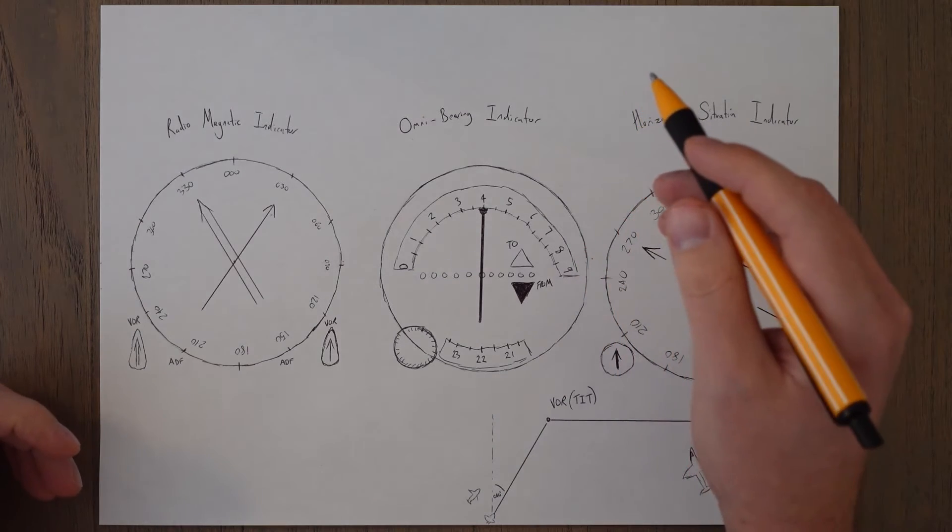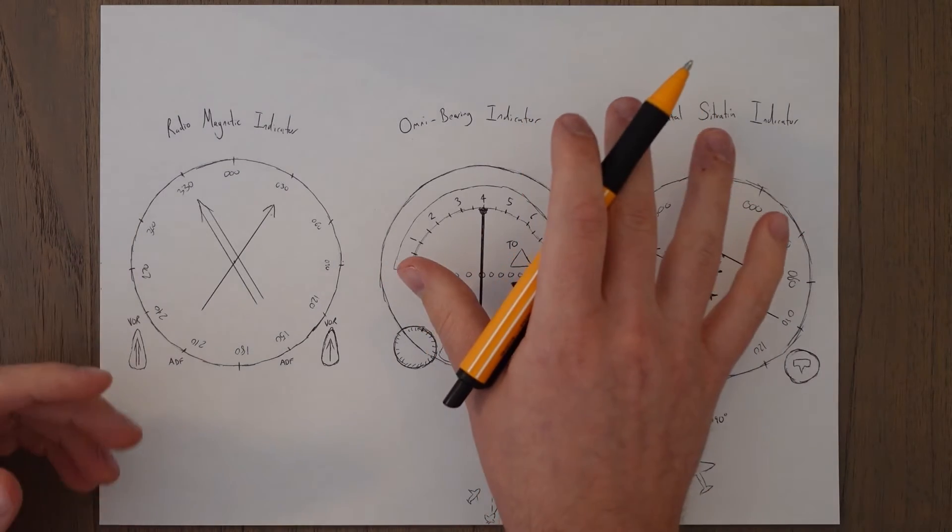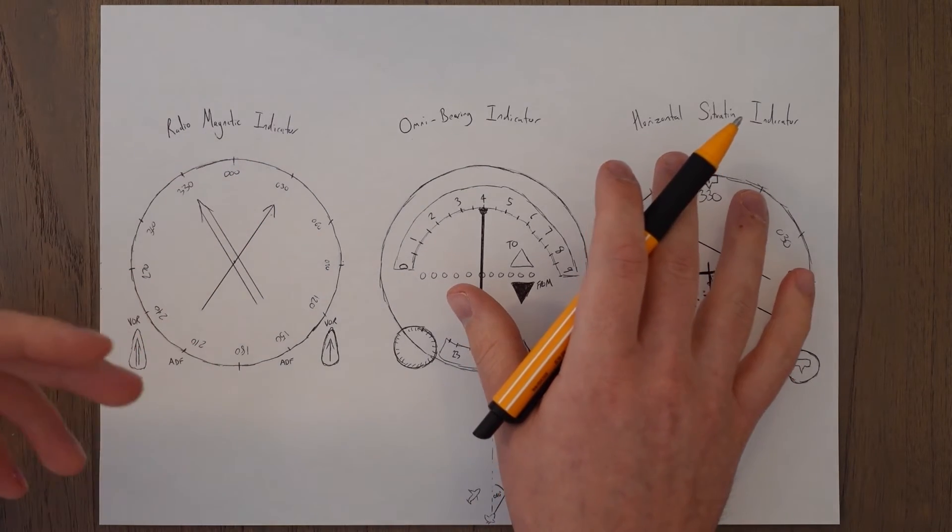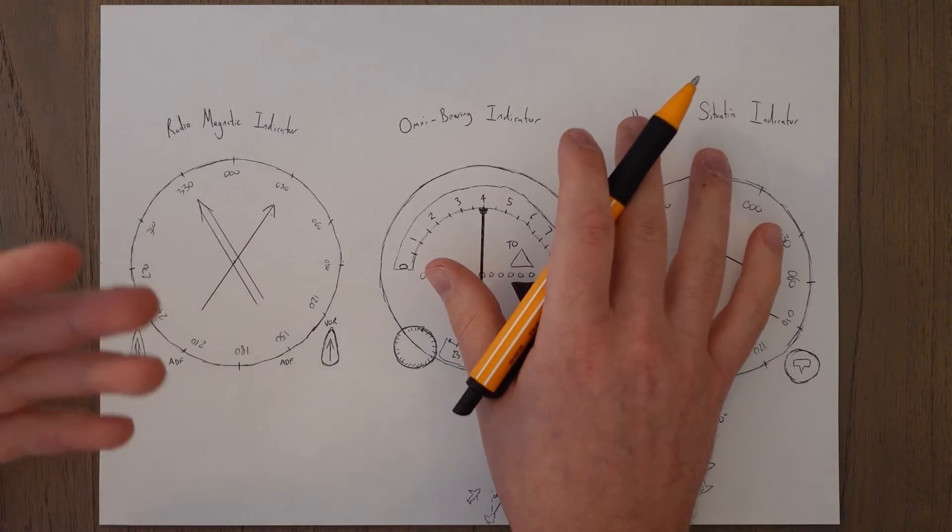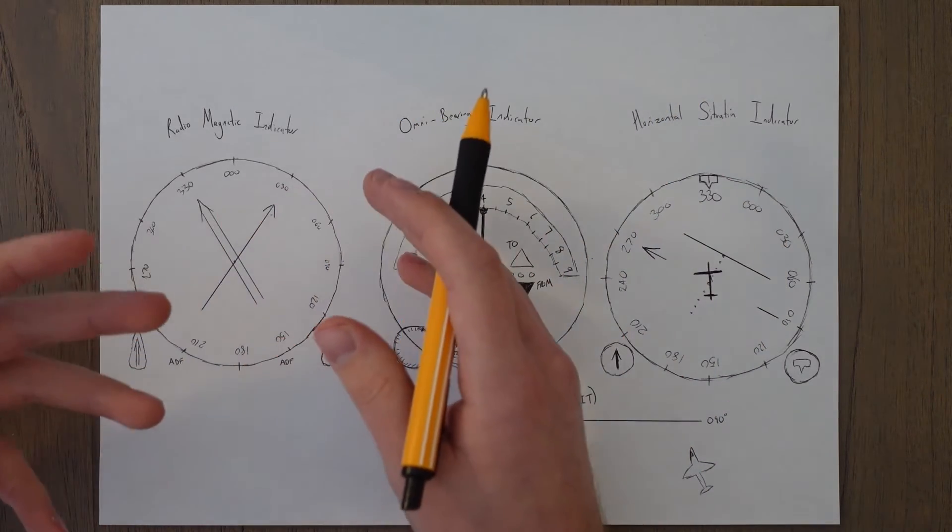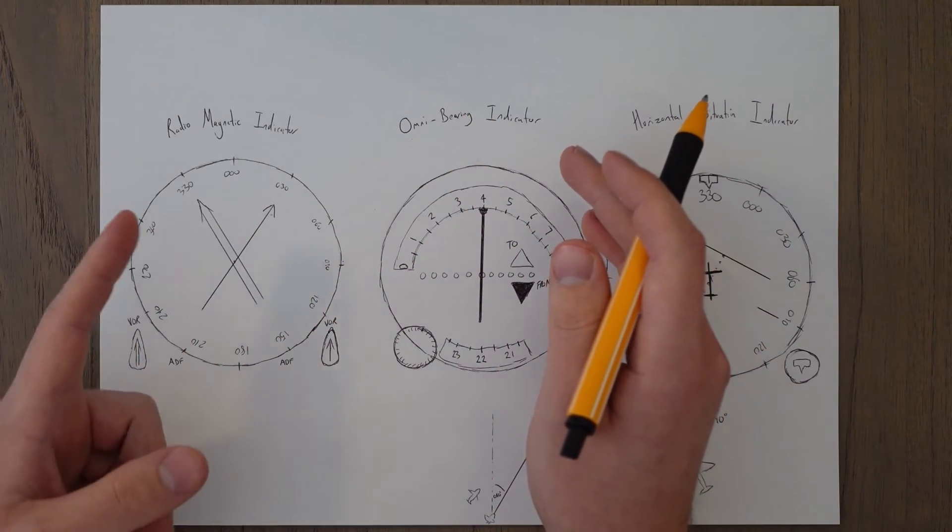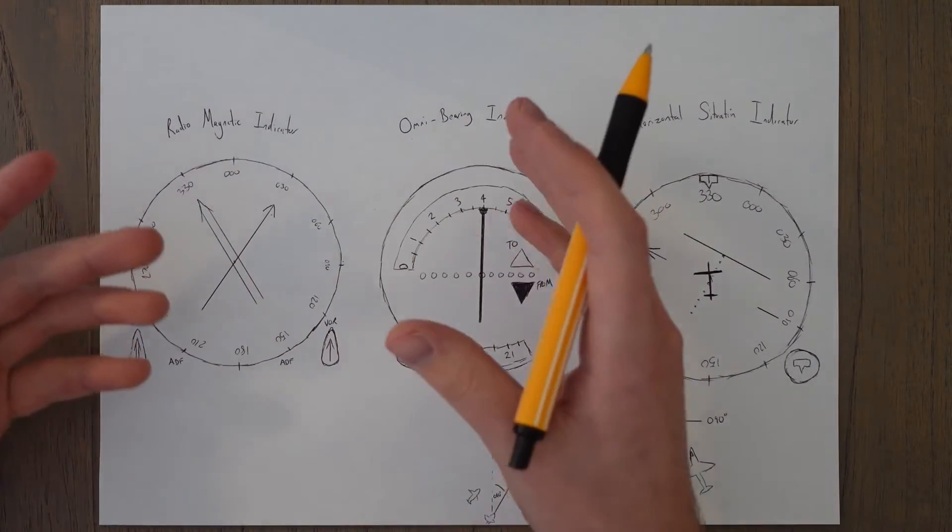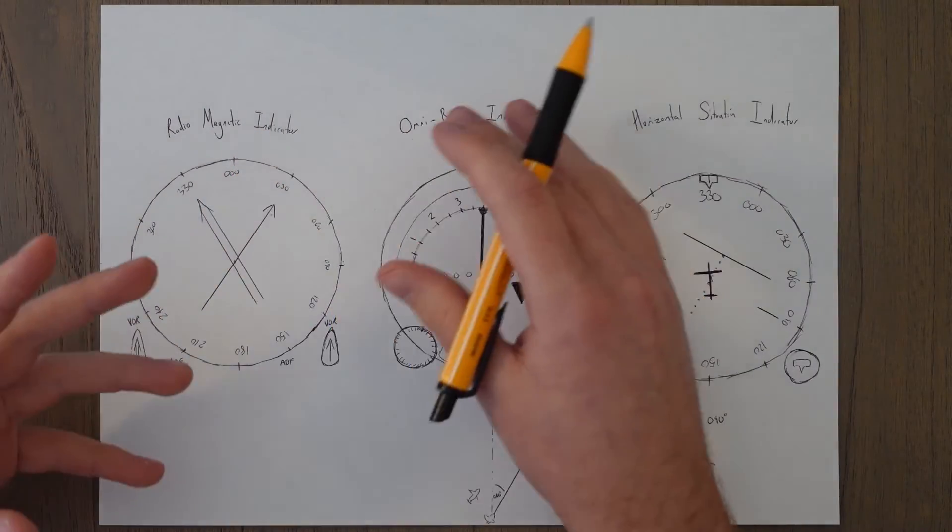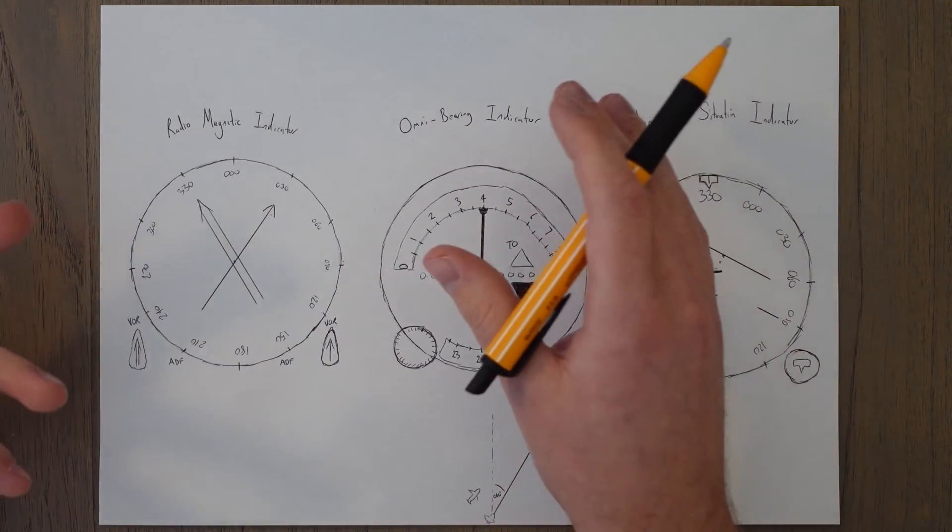The most basic way of displaying VOR information is using a radiomagnetic indicator, or an RMI, and you use it in much the same way you do as an NDB. It's a basic form of using a VOR and essentially serves as an arrow pointing towards the VOR, which doesn't use all of that useful bearing radial spokes on the wheel information that's actually sent out by the VOR.